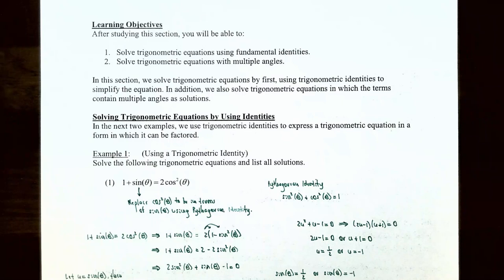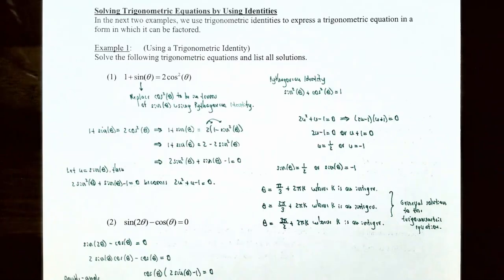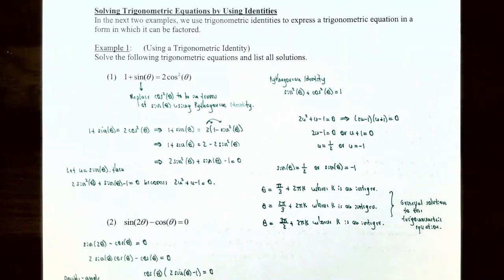In the next two examples we're going to use trigonometric identities to solve a trigonometric equation in a form in which it can be factored. Example one: using a trigonometric identity, solve the following trigonometric equations and list all solutions — we'll have the general form for the solution. Number one, we're going to solve the equation: 1 plus sine of theta is equal to 2 times cosine squared of theta.